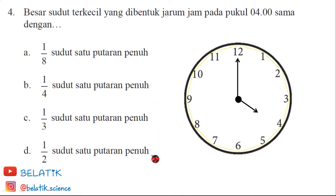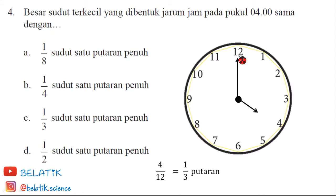Untuk cara pertama, kita memasukkan rumus yaitu 4 per 12, atau sama dengan 1 per 3 putaran. Karena 1 putaran itu adalah dari angka 12 kembali ke 12, sementara disini dari 12 ke angka 4, sehingga hanya 4 per 12. Maka jawabannya adalah 1 per 3 putaran.